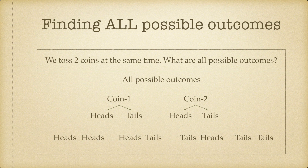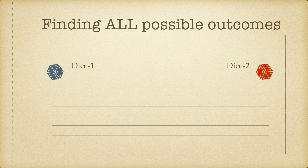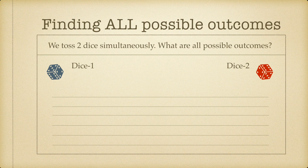So there are a total of four possible outcomes when we toss two coins at the same time. Each coin by itself has only two outcomes — head or tail — but with two coins we have four outcomes. Now let's take a look at our second example: rolling two dice at the same time. We'll call the blue die dice one and the red die dice two.